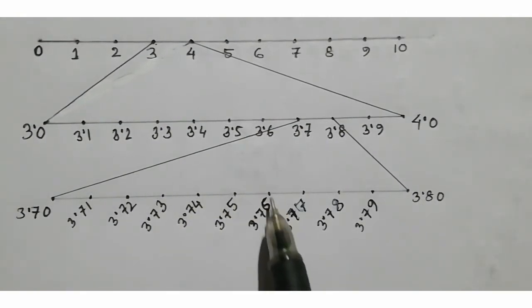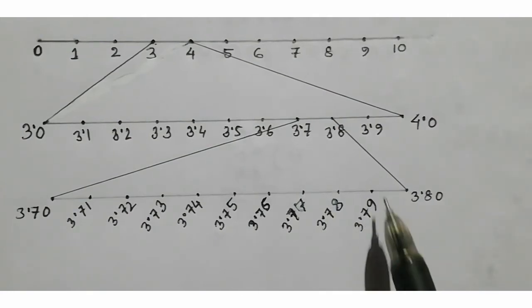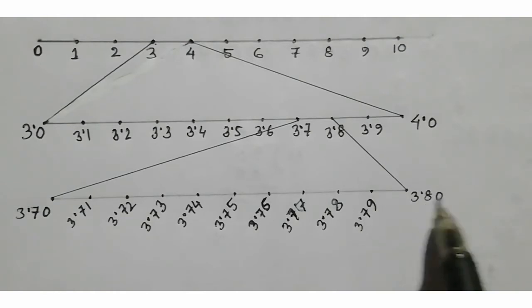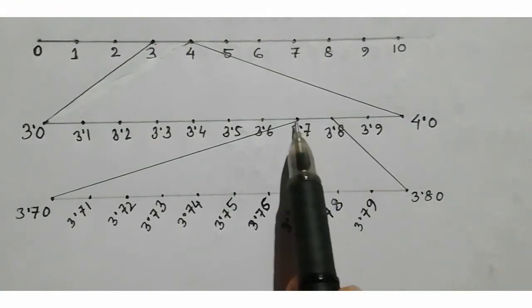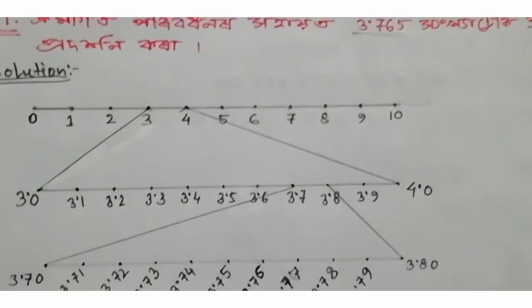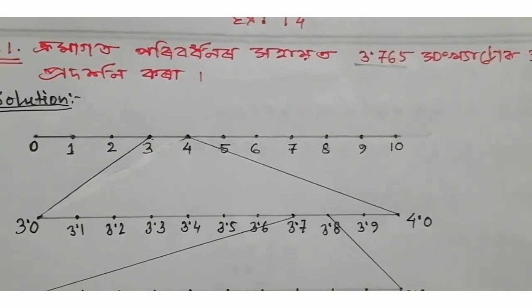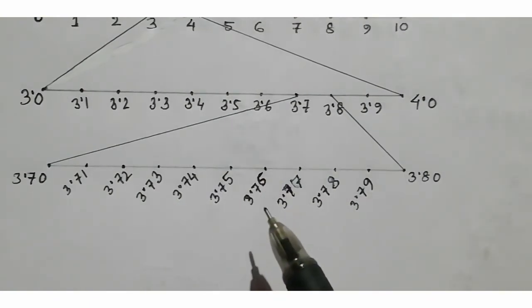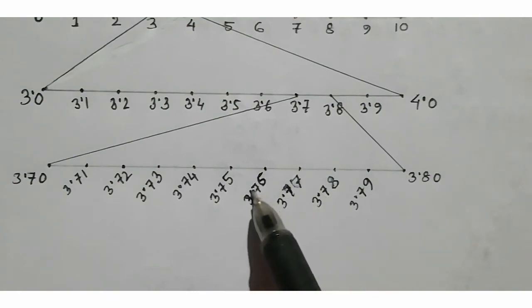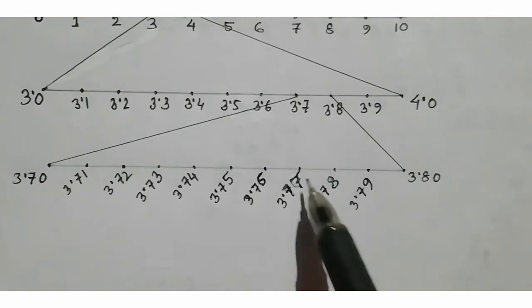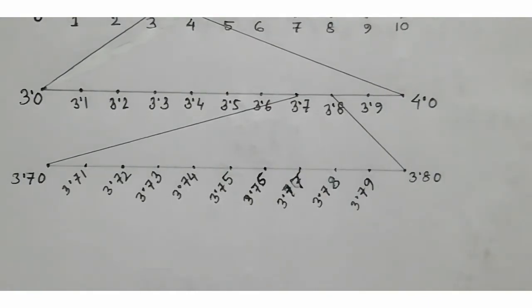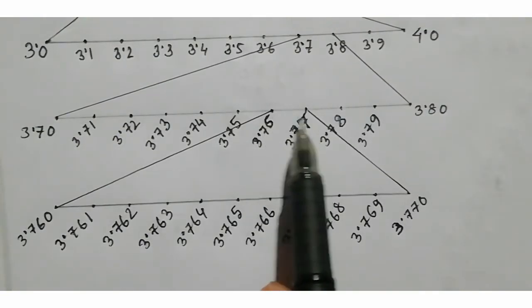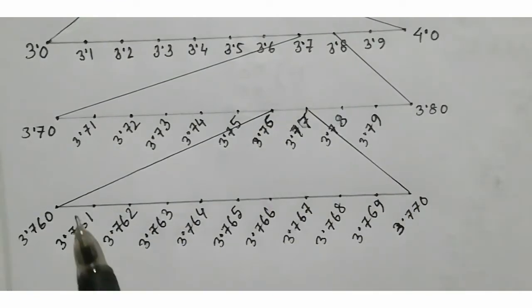Now zooming in: 3.73, 3.74, 3.75, 3.76, 3.77, 3.78, 3.79, 3.80. Here we are — we are going to zoom. Students have to say 3.76 or 3.77 — the same thing is about 10 centimeters.